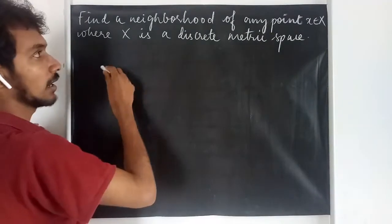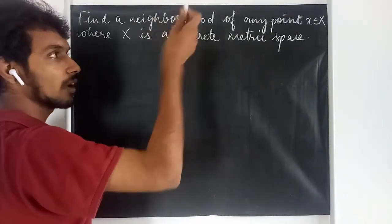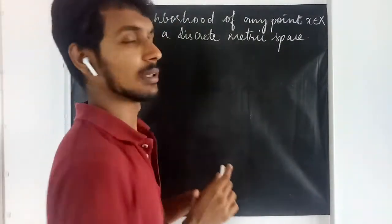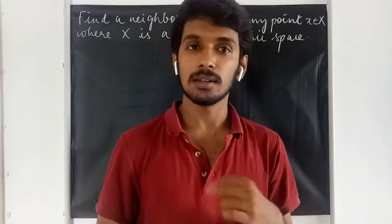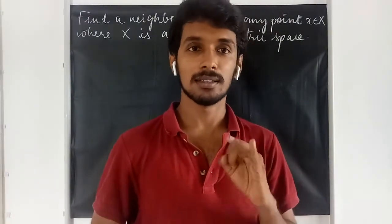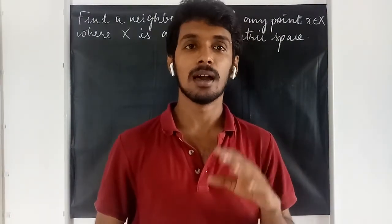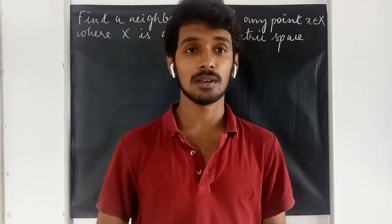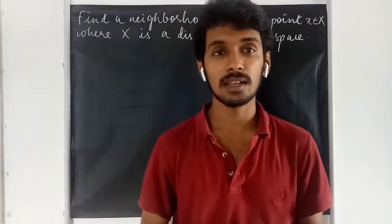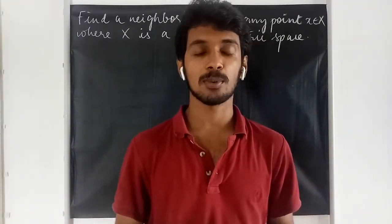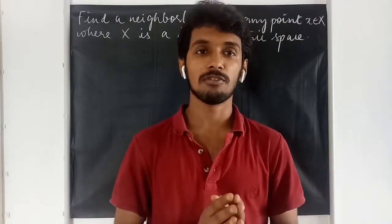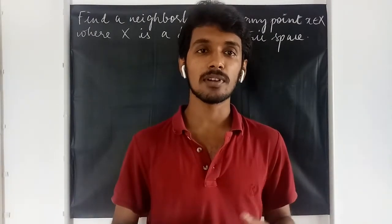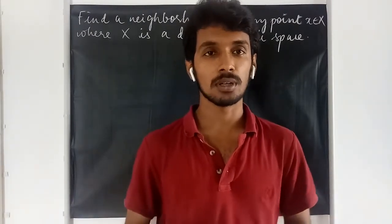In this example, we are asked to find the neighborhood at any point where x is a discrete metric space. The point is not given, the set is not given, and the radius is not given either. So we will have to explore all possibilities and find what neighborhoods are possible.